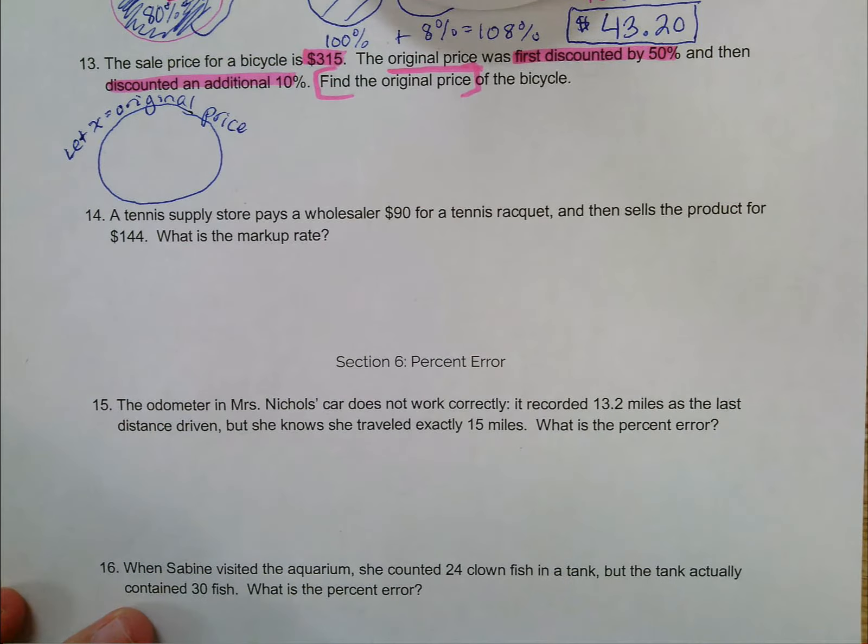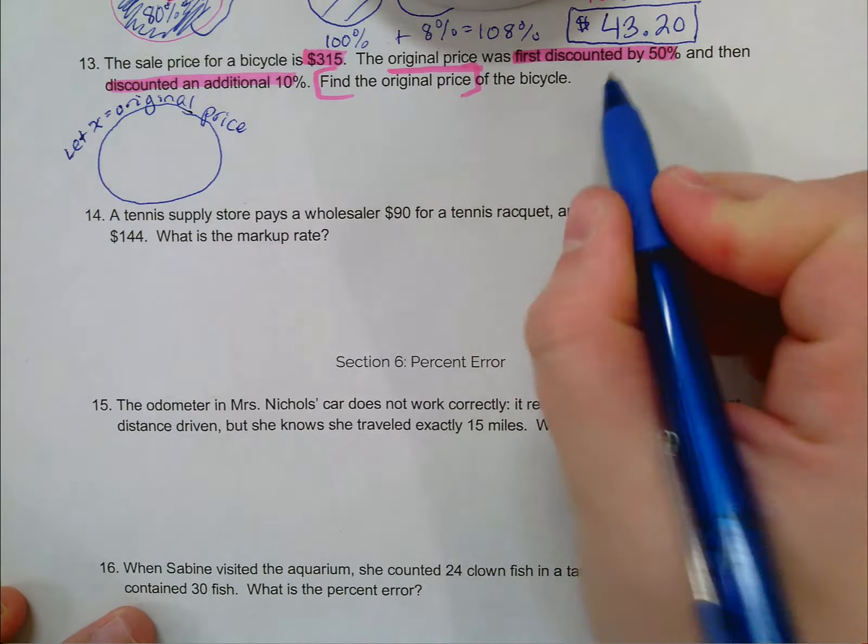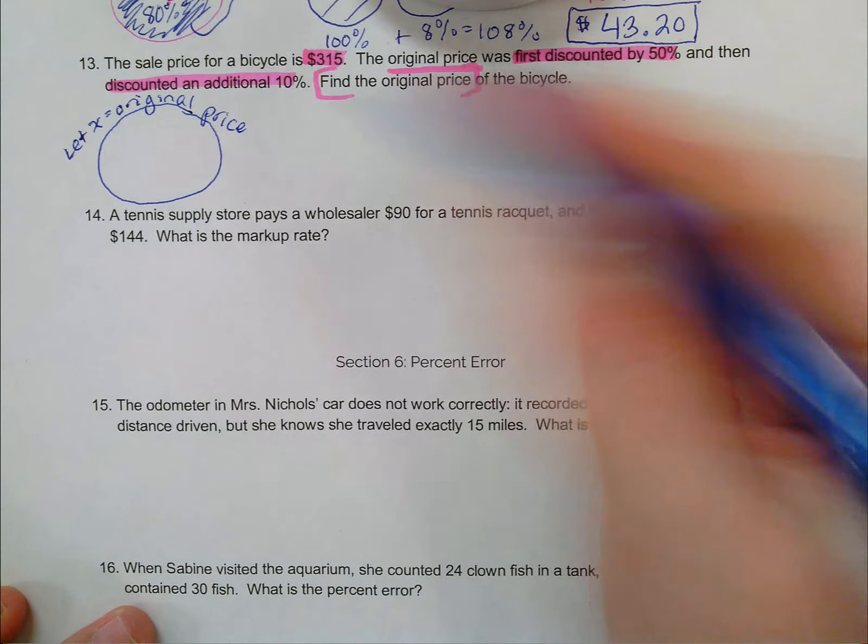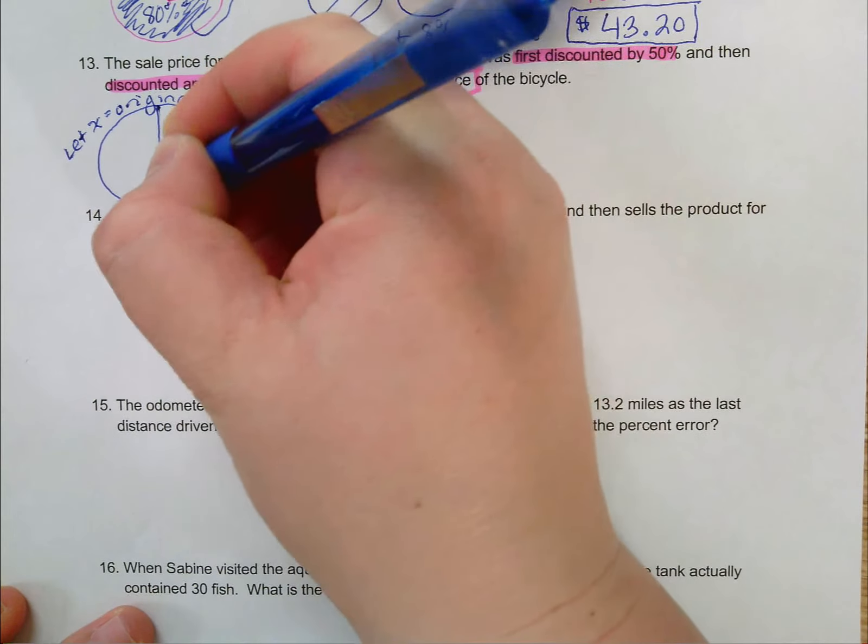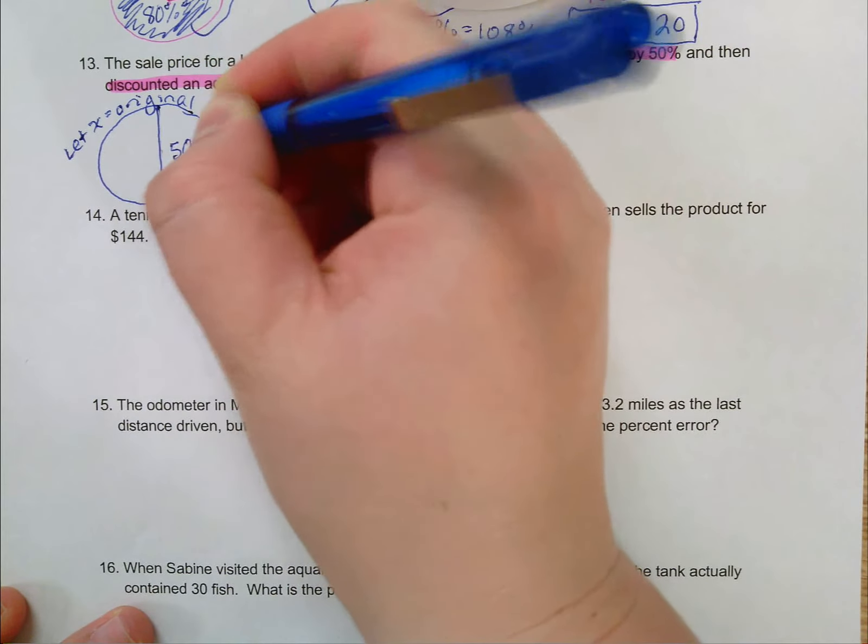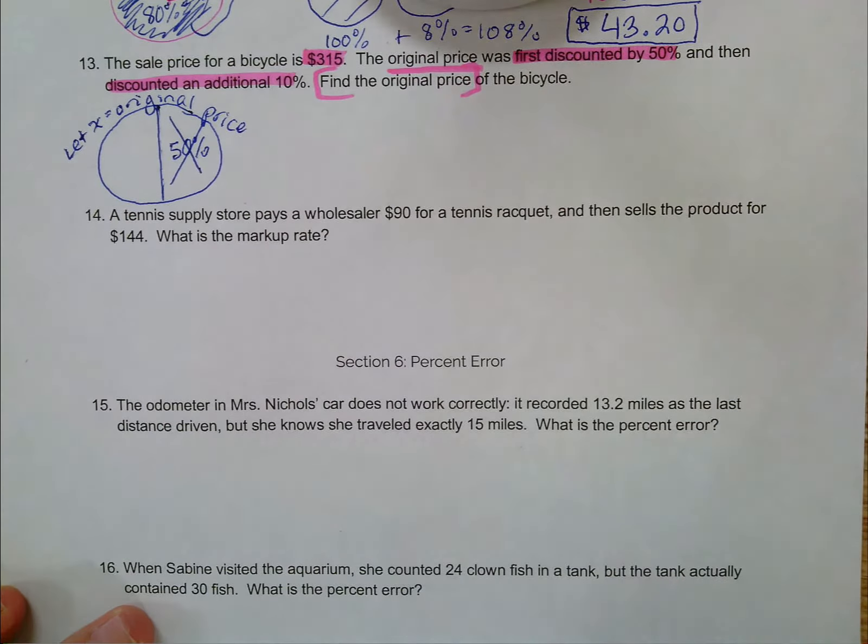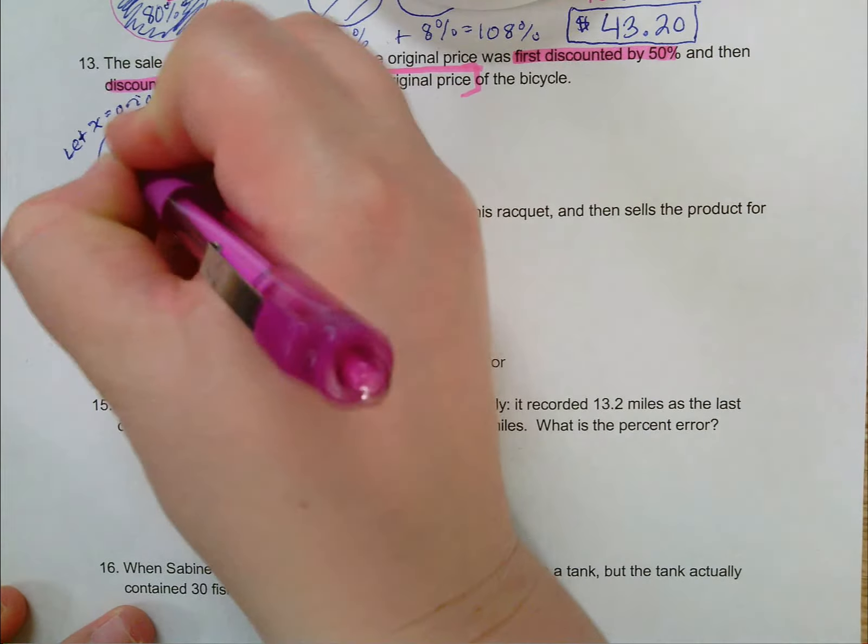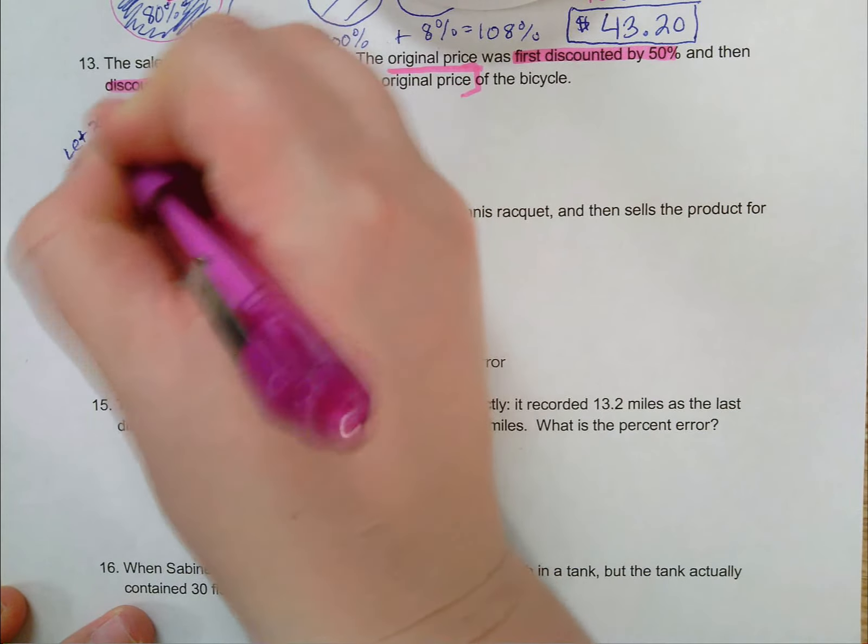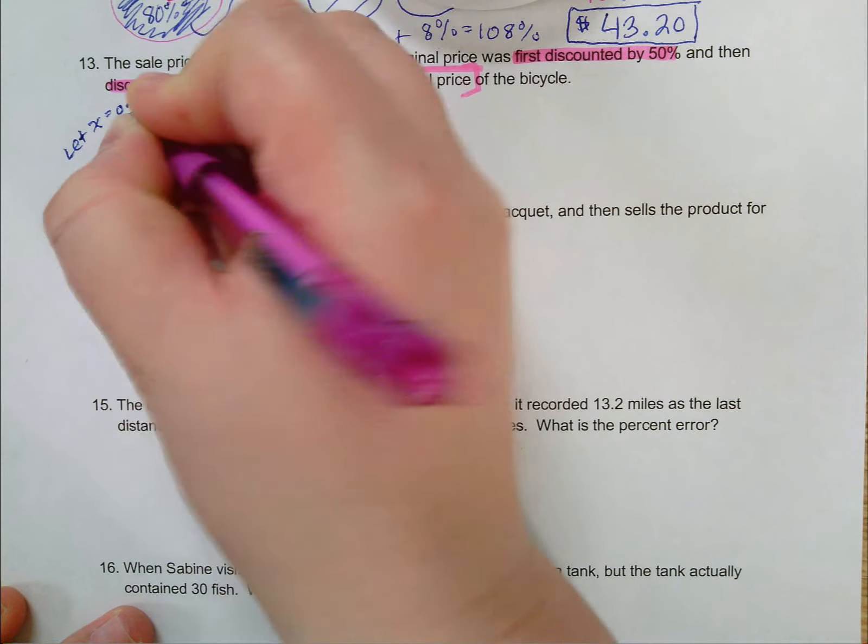I'm denoting X with our blue circle here. That represents our whole. First it was discounted by 50%, so we're saying it's 50% off. That means I don't have to pay for 50% of it, but it also means I do have to pay for the other 50% of it.